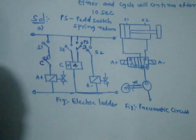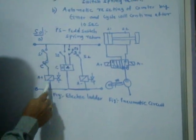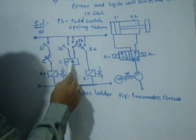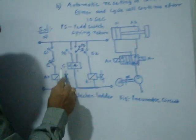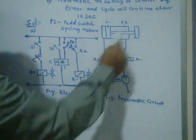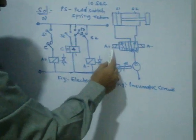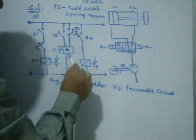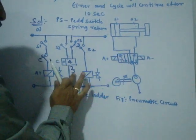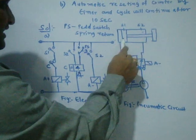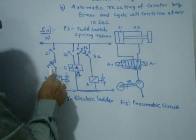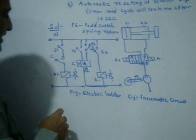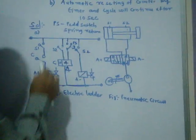I will explain once again how it works. The piston is at S1 — it closes, current flows to A+. When A plus is on, the piston goes to S2. When the piston goes to S2, it closes — the counter counts one. At S2, A minus brings it back. Once again it goes to S2, it counts two; comes back; three; goes to four. When it goes to four and comes back, counter C turns on. Then automatically this normally closed contact opens, breaking current to A plus.